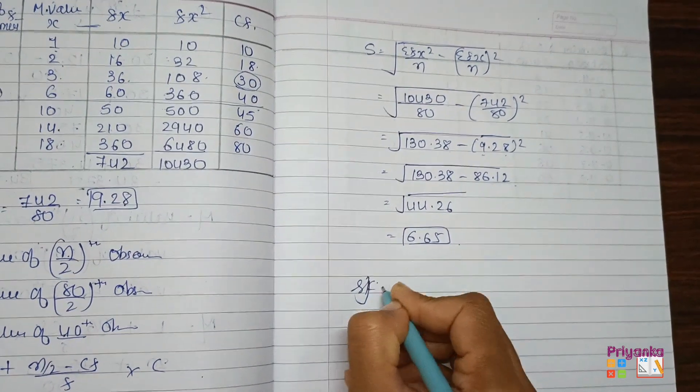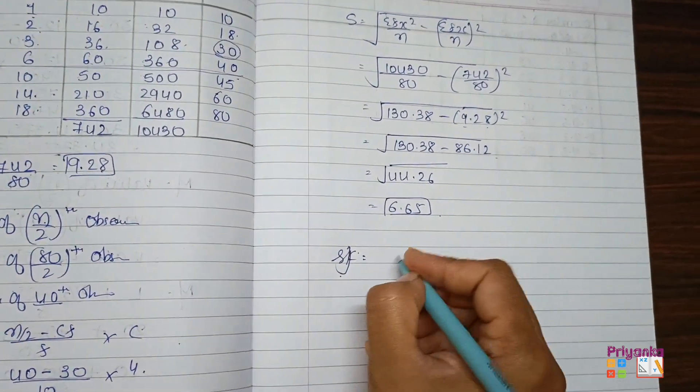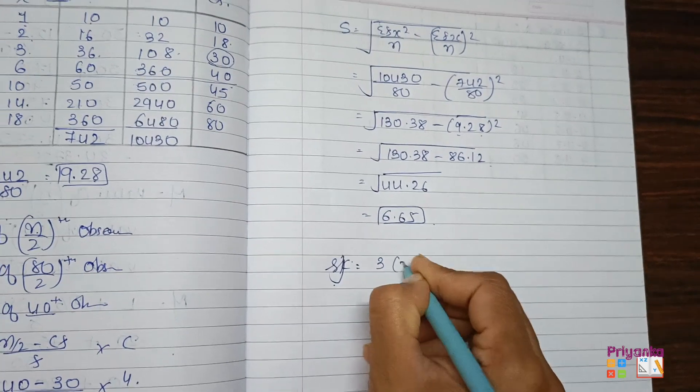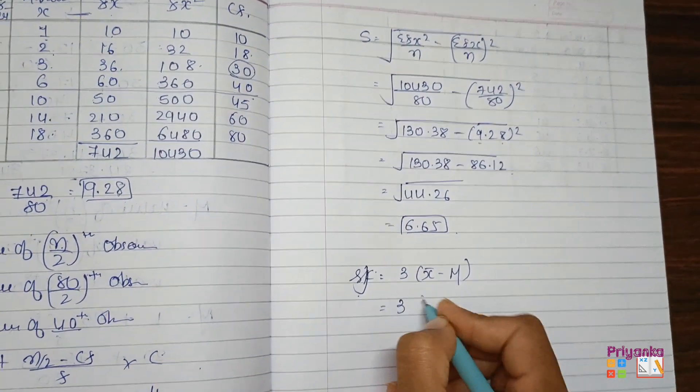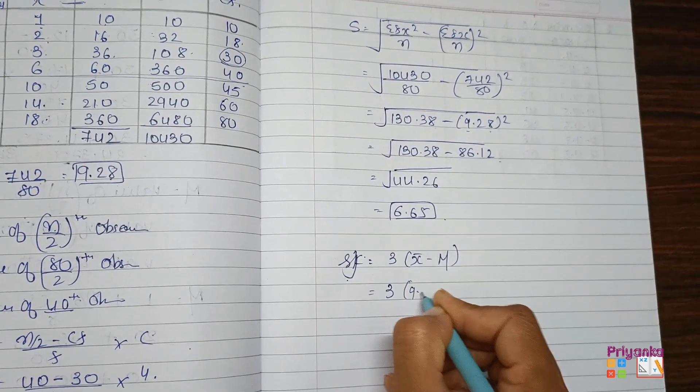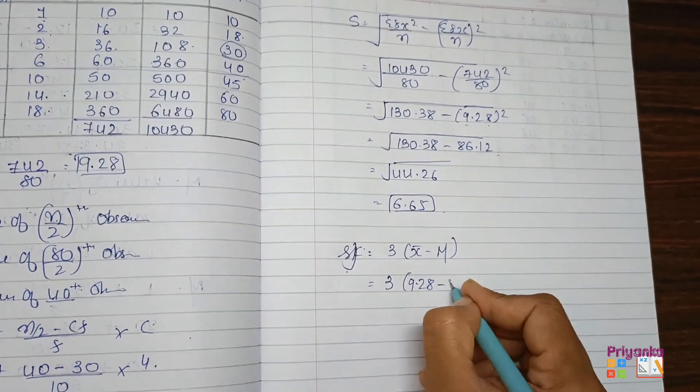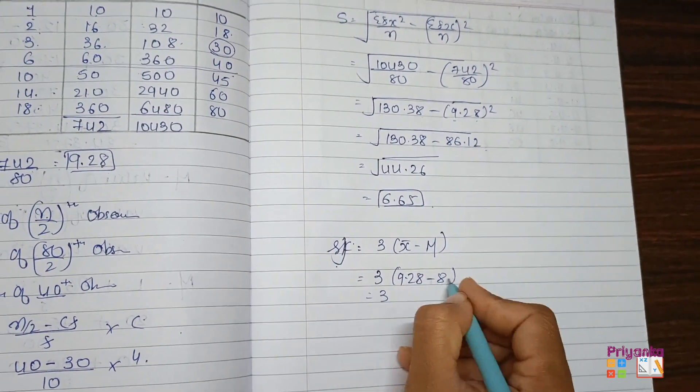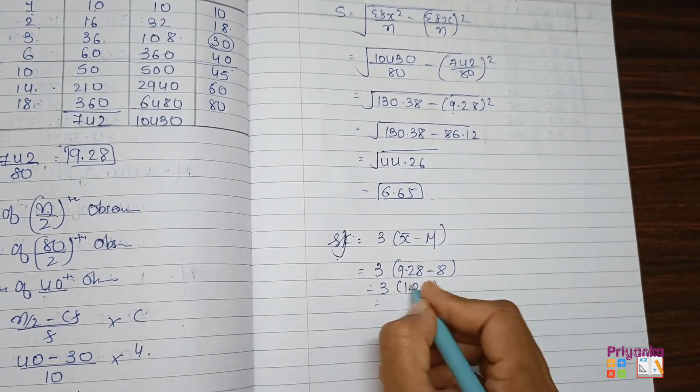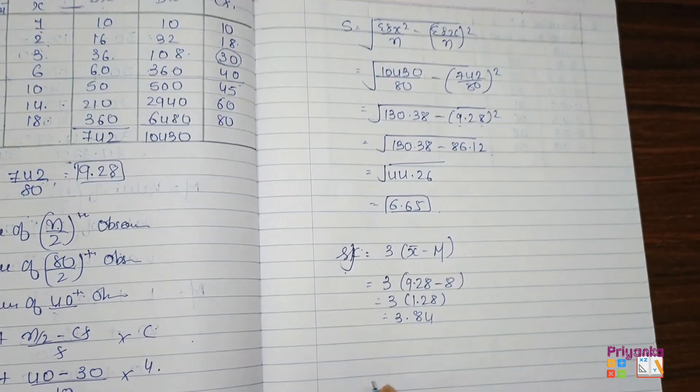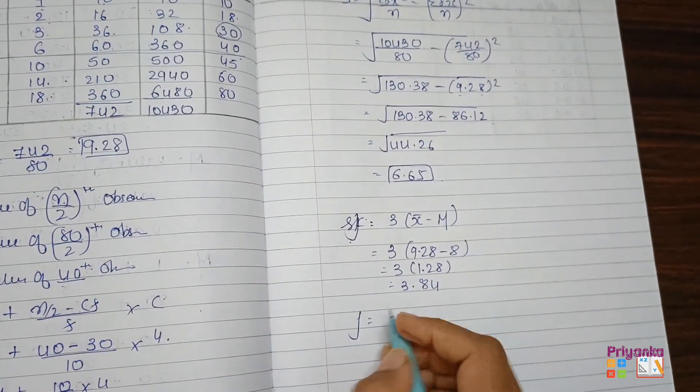So here we have the value of mean, median, and standard deviation. First the question is asking for the skewness, so we'll keep this skewness value. 3 mean minus median, 3 times 9.28 minus median is 8. Get them subtracted, it will be 1.28, and the multiplication of this will be 3.84.